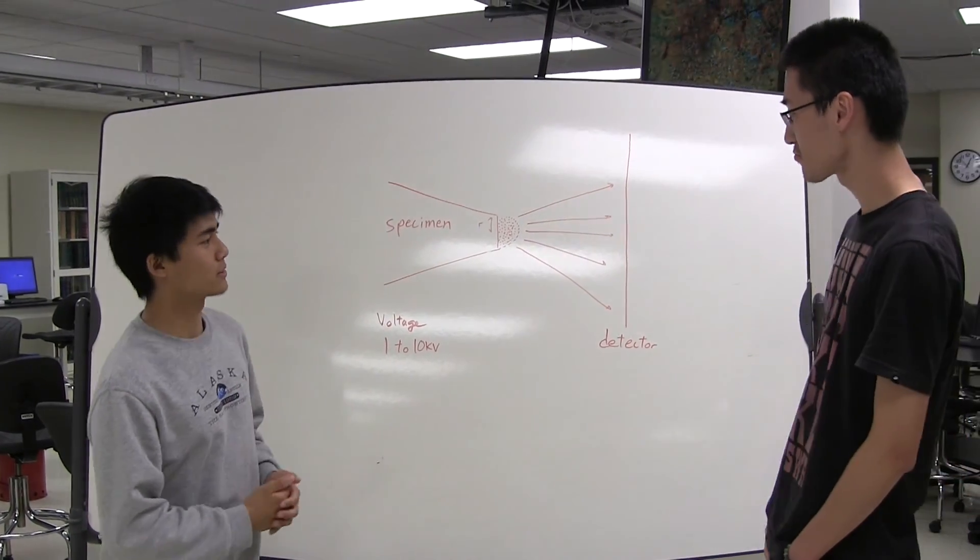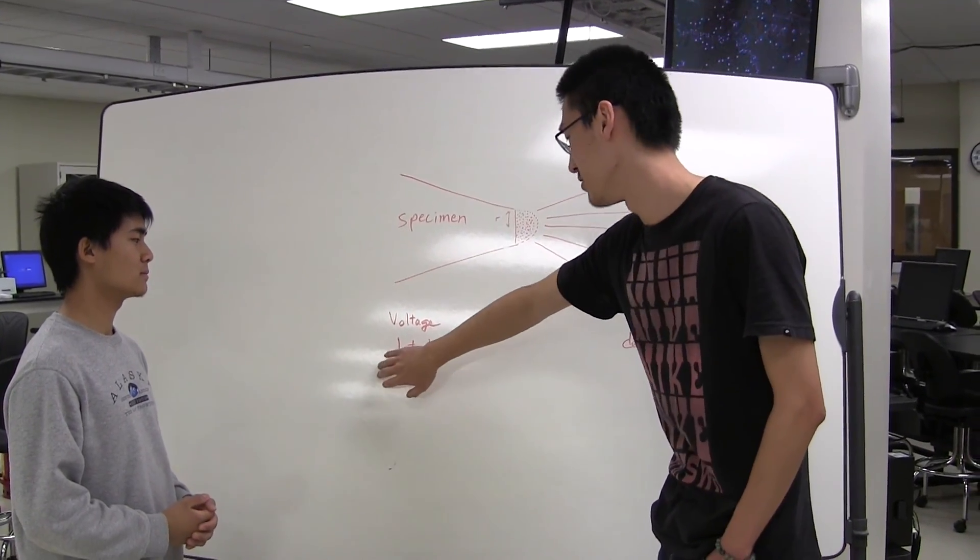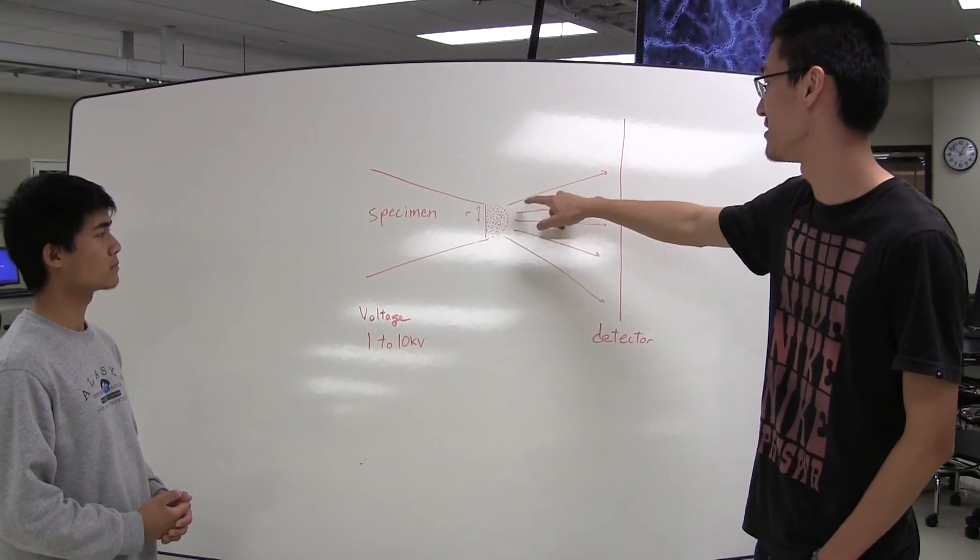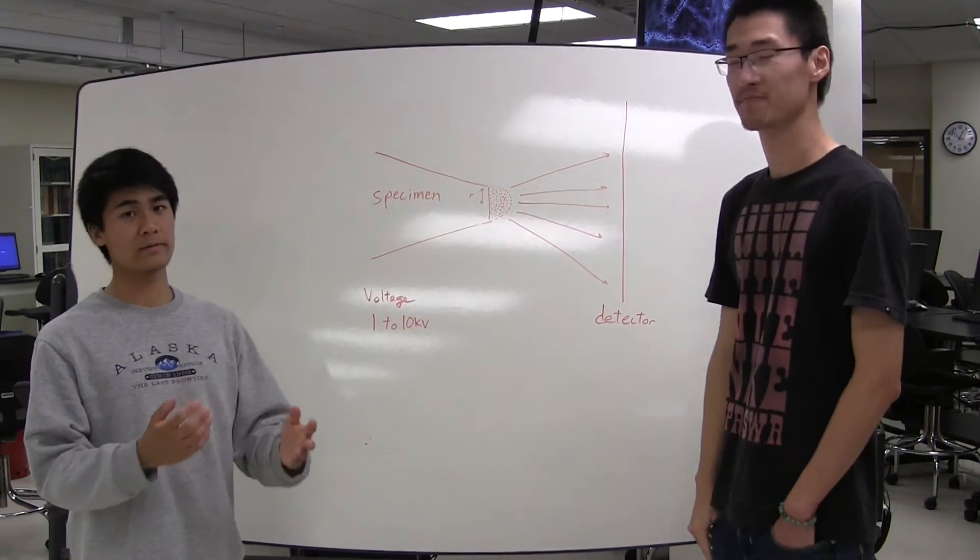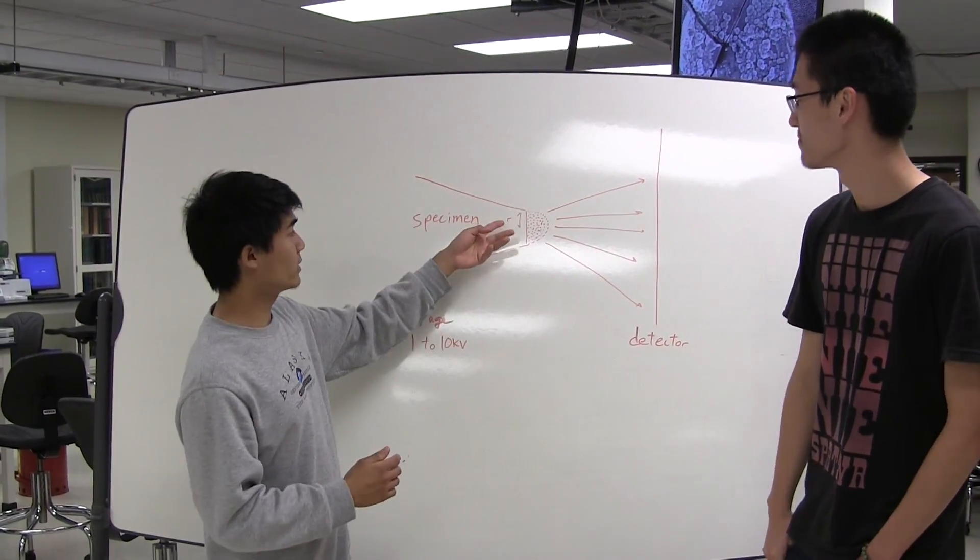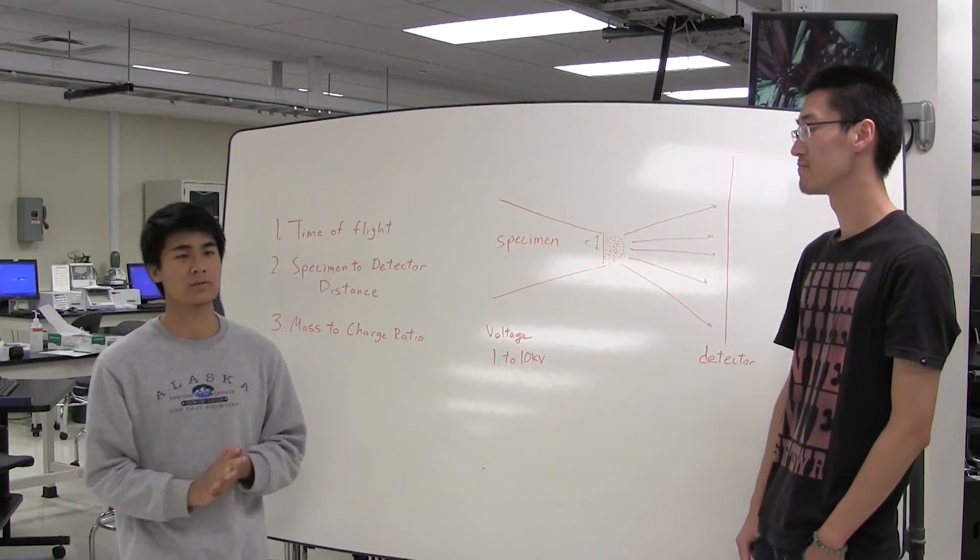So how does the atom probe work? Well, the atom probe will generate a voltage from 1 volt to 10 kilovolt. And then the atom here will be ionized and hit the detector. In order for this to be successful, our specimen needs to be extremely sharp. The radius, as seen here, is typically about 50 to 100 nanometers.